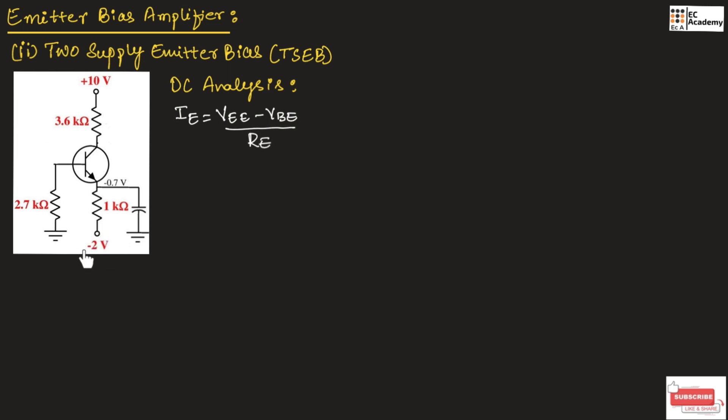Here, across the emitter terminal, the negative of the power supply is connected. That's why it is mentioned as minus 2V, the negative terminal of 2V supply. While writing in the formula, you need to take the positive value of that voltage. You need not write minus 2V. If we substitute the values, we will get 2 minus VBE, which is 0.7V, divided by RE which is 1 kiloohm.